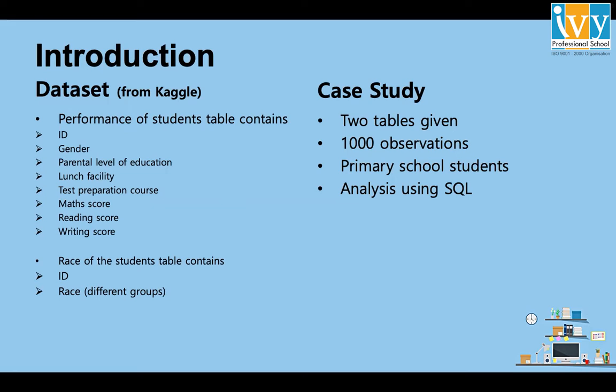The race of the students table contains the ID of the students, which is the primary key in the performance table and works as a foreign key in the race table. The race variable has different groups: group A, group B, group C, and so on.